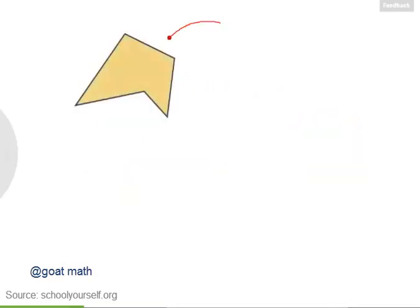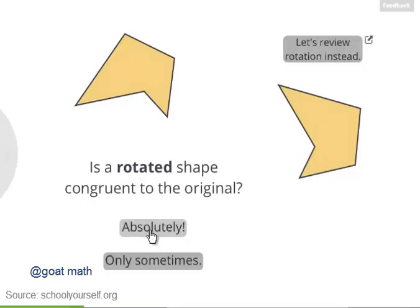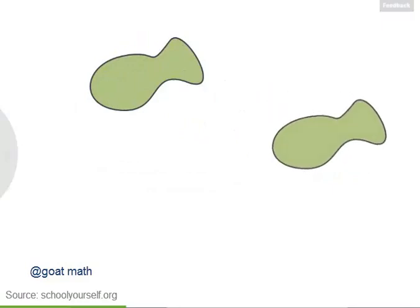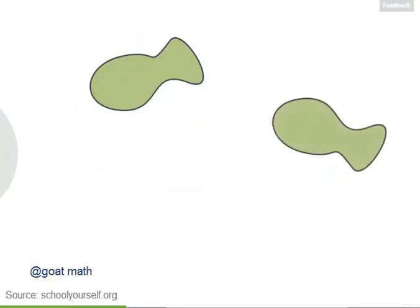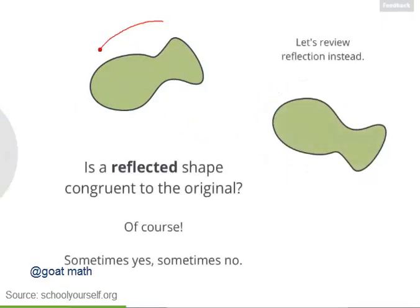Next, let's look at this shape. If we were to rotate this shape, is it still congruent to the original shape? Now let's take this shape over here and we'll reflect or flip it. Is the reflected shape congruent to the original?